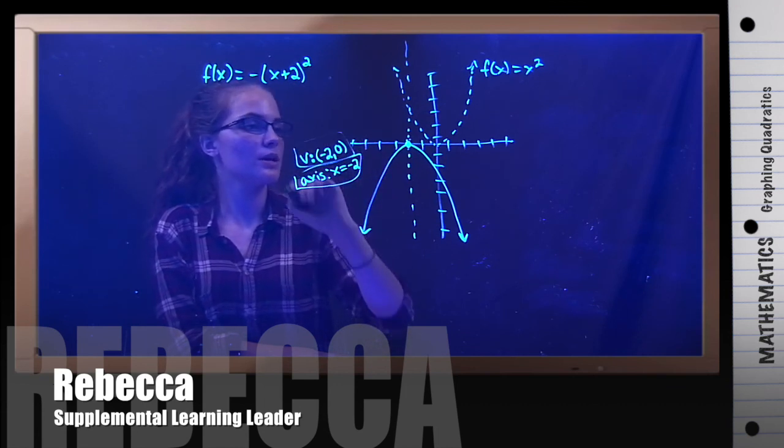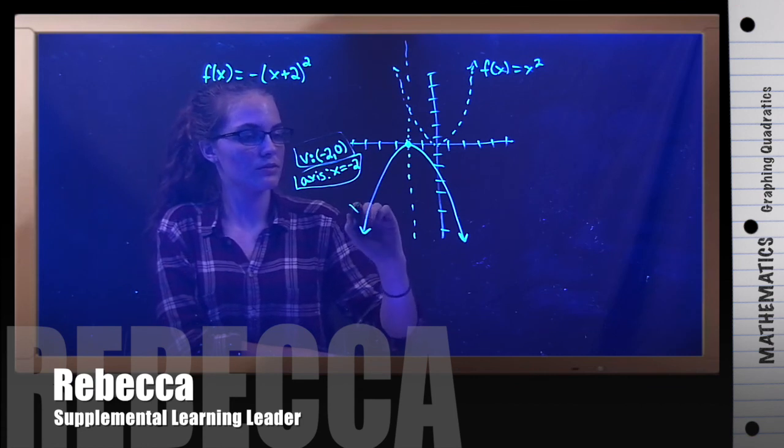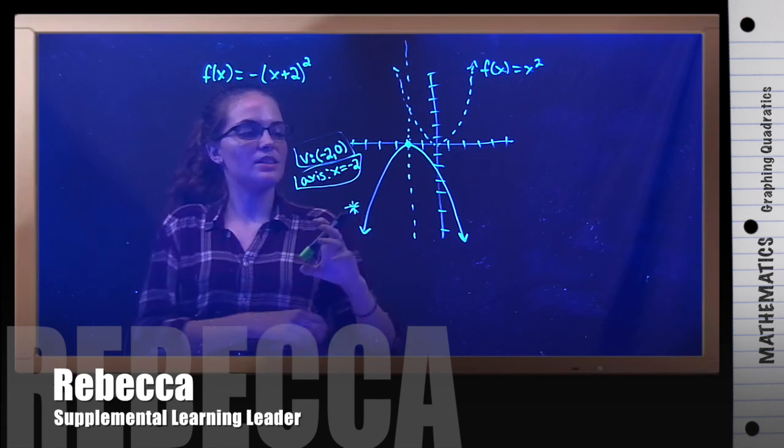So this is the axis of symmetry. This is the vertex. And this is the graph. And that's our final answer.